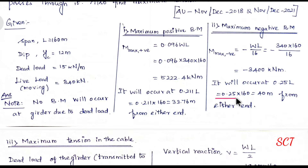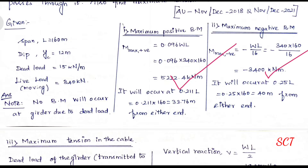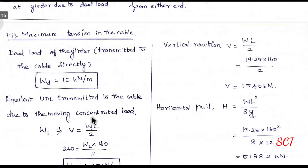The position of maximum negative bending moment is at 0.25 × L from each end. With total span = 160 m, that means 0.25 × 160 = 40 m. So the left-hand position is 40 m and the right-hand position is 40 m from their respective ends.